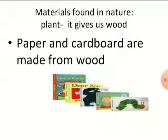One thing we use in our daily life — in school — is paper. Where does it come from, or which material is used to make paper? The most common material is the plant, which is already found in nature. It gives us wood, and from wood we can also make paper. Paper and cardboard are made from wood — all the books and cardboard materials are made from wood, which we get from plants.